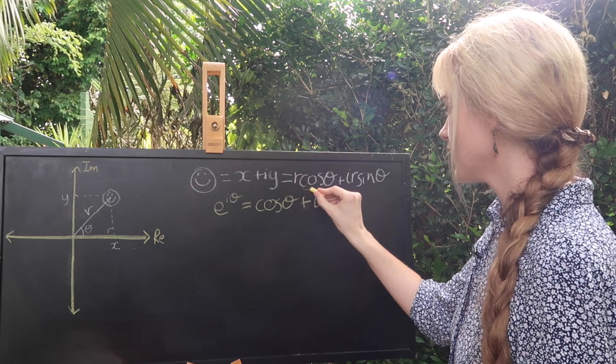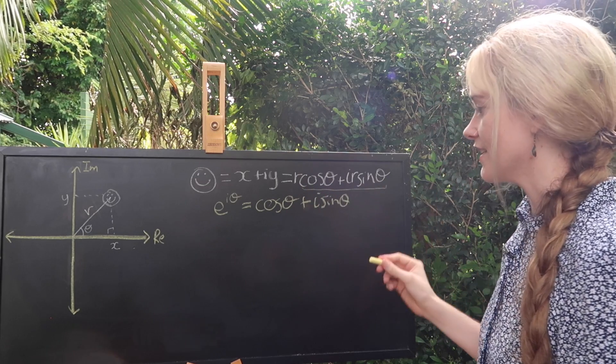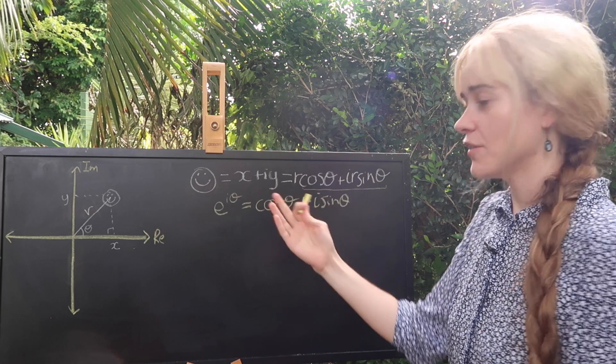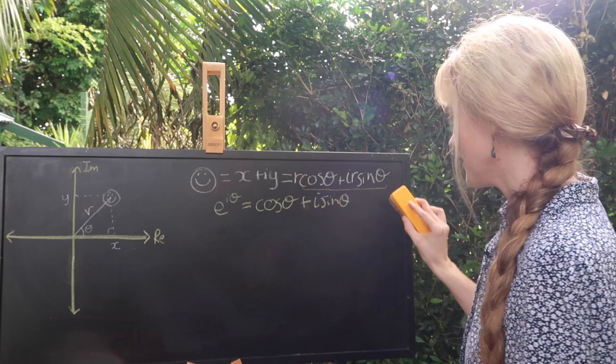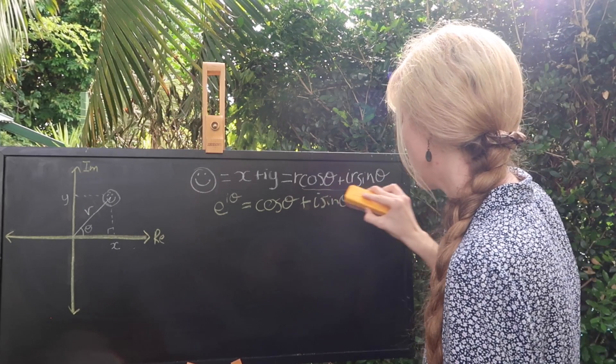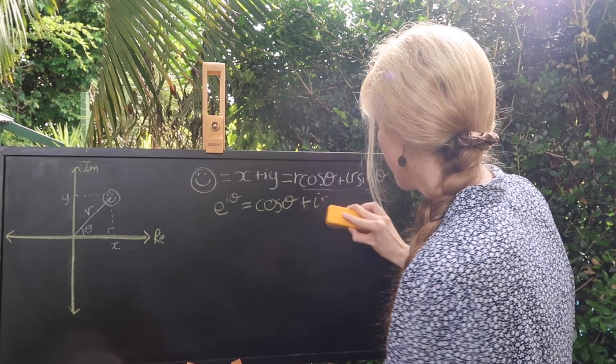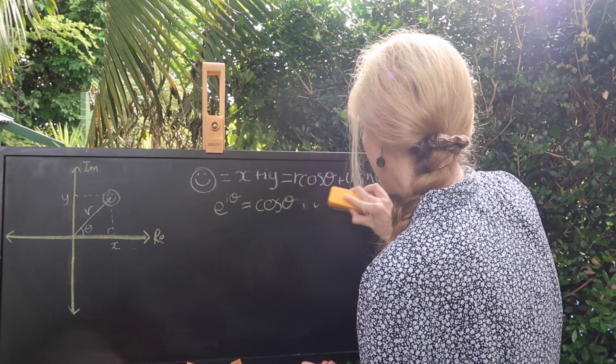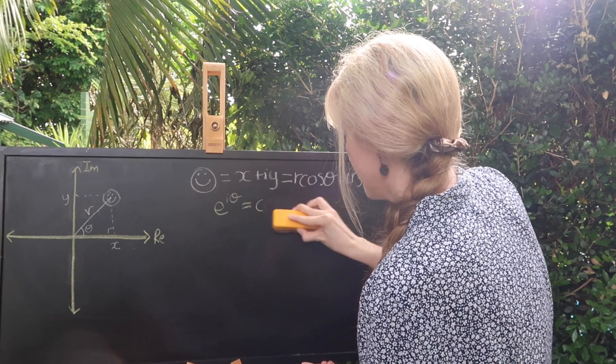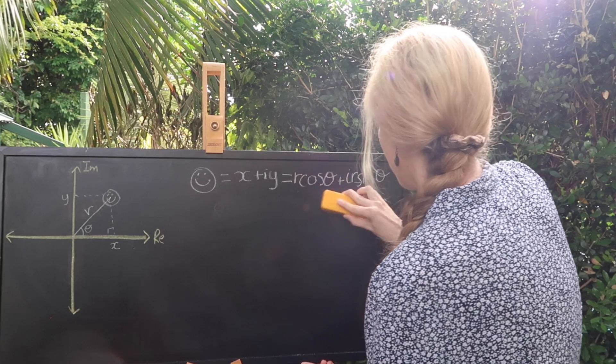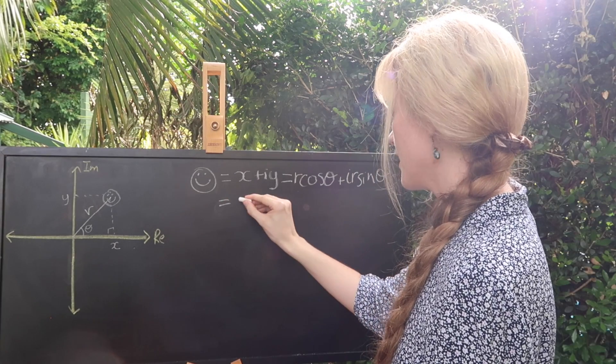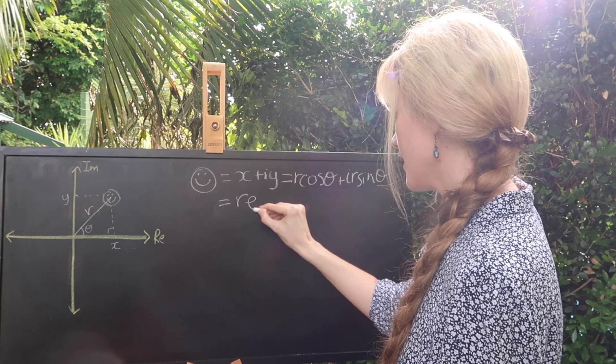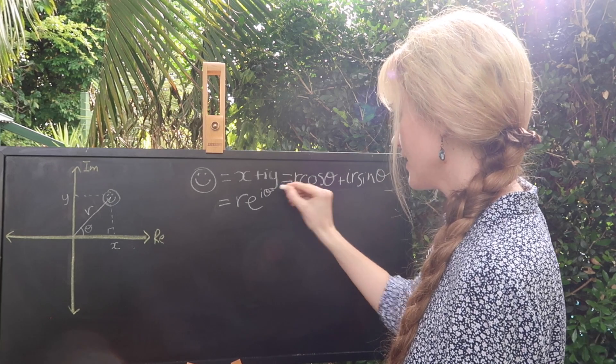We have a cosine theta plus i sine theta in here so actually we can use Euler's formula to rewrite this expression up here. I'll get rid of it since we now know what we can do. There we go and just beat the Euler out of it. Friend is going to be r e to the i theta.